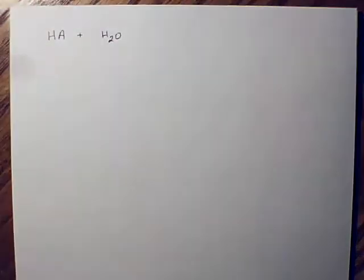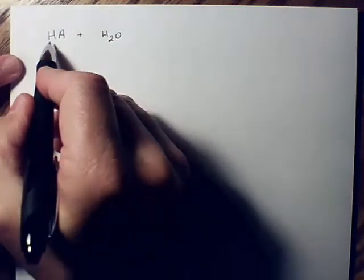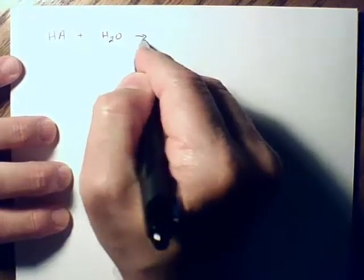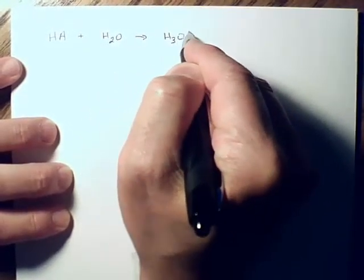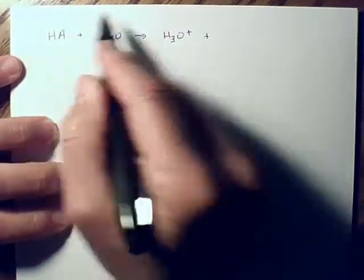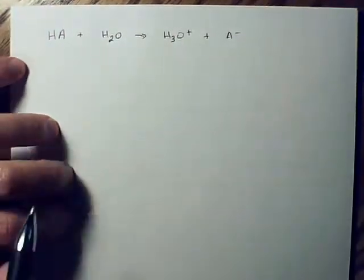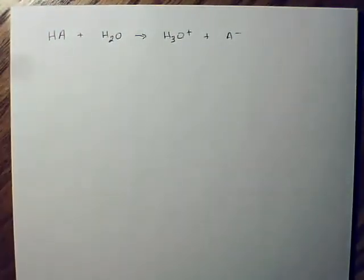Well, the HA, if we put it with water using the Bronsted-Lowry theory, then this hydrogen is going to go over and join up with the water molecule making hydronium, and then you're going to have the anion by itself. And that's a general formula for the dissociation of an acid that works for any kind of acid.